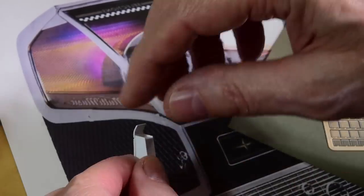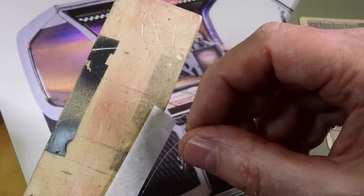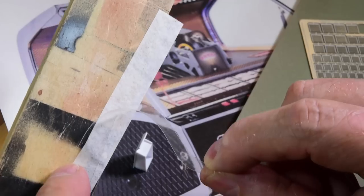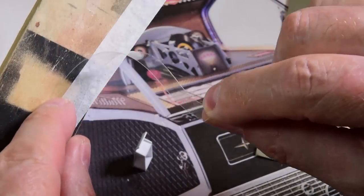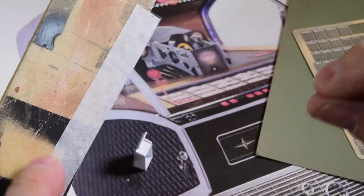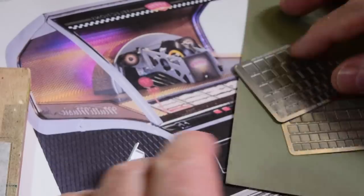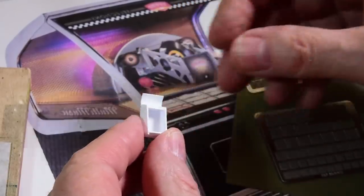I'm going to sheet the front of this with this 5 thou clear. You can bend that and crease that. I'm going to use that for the sides and for the front.